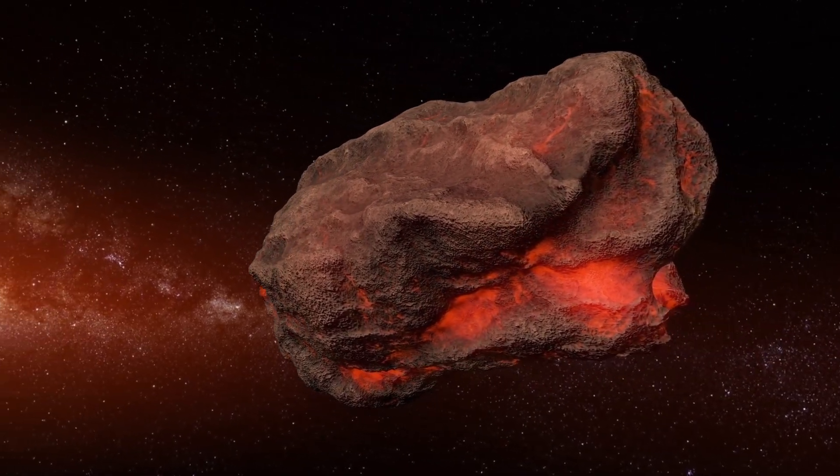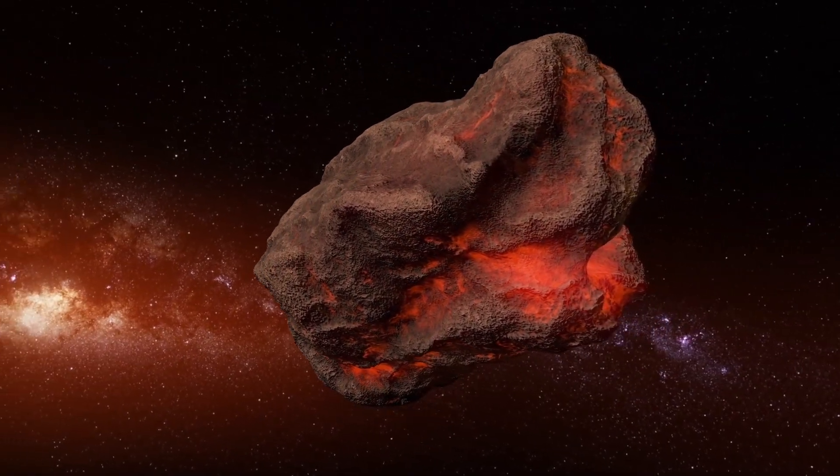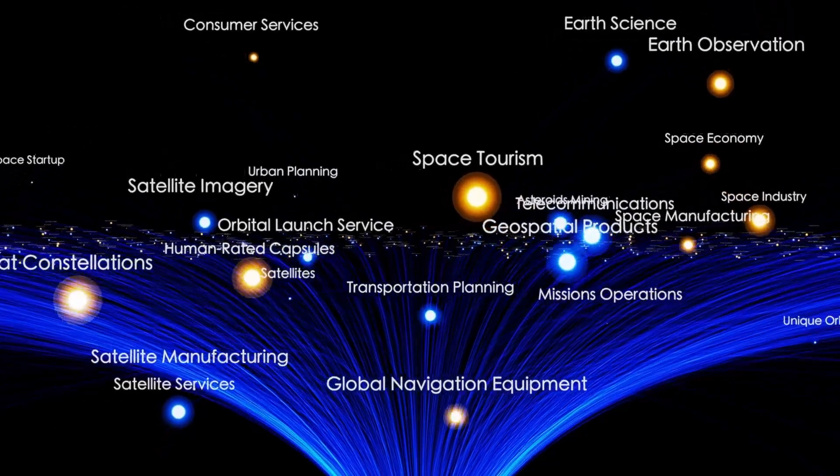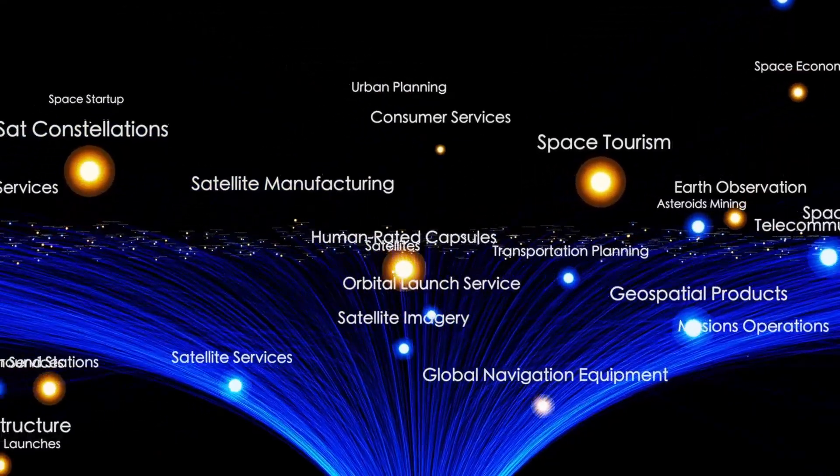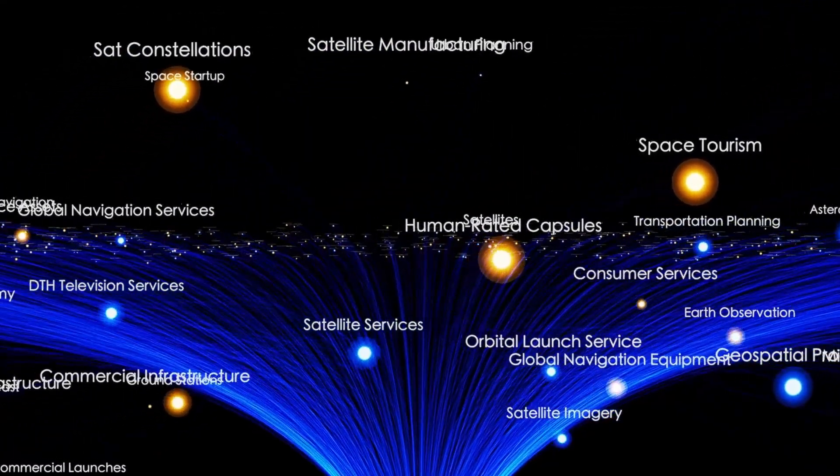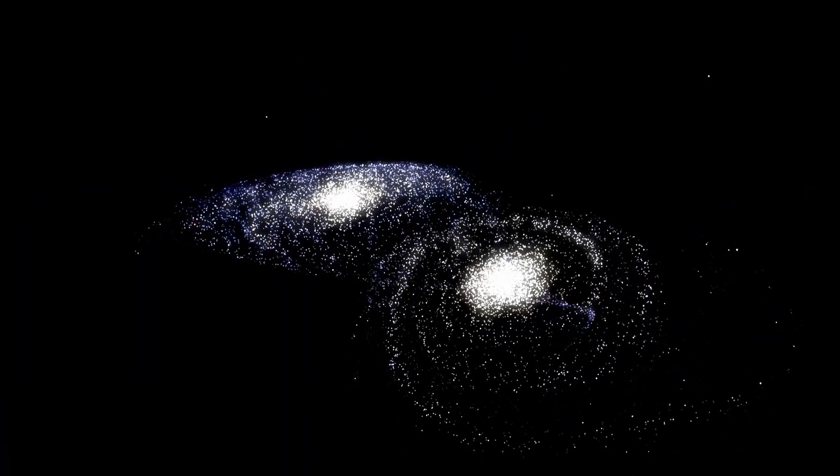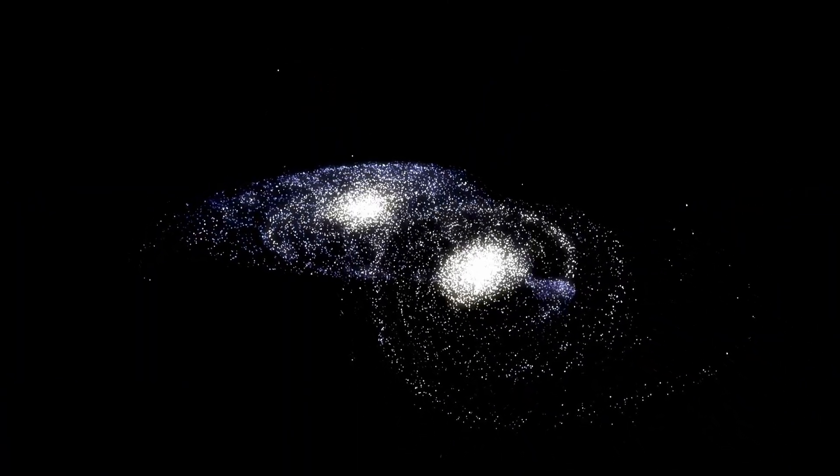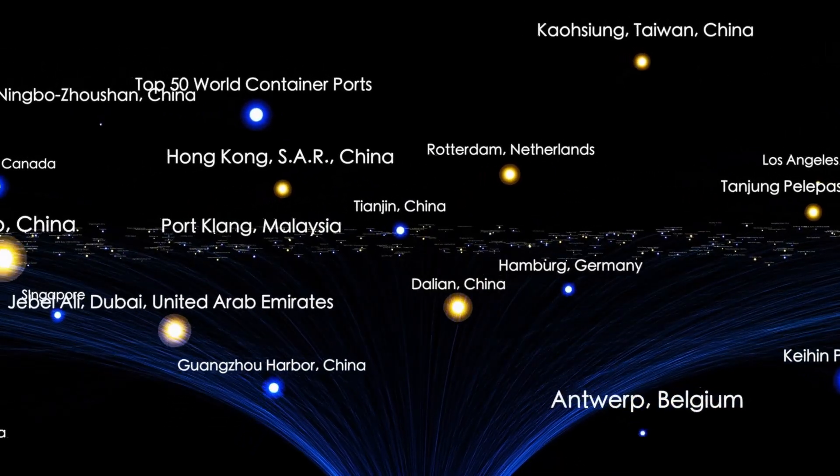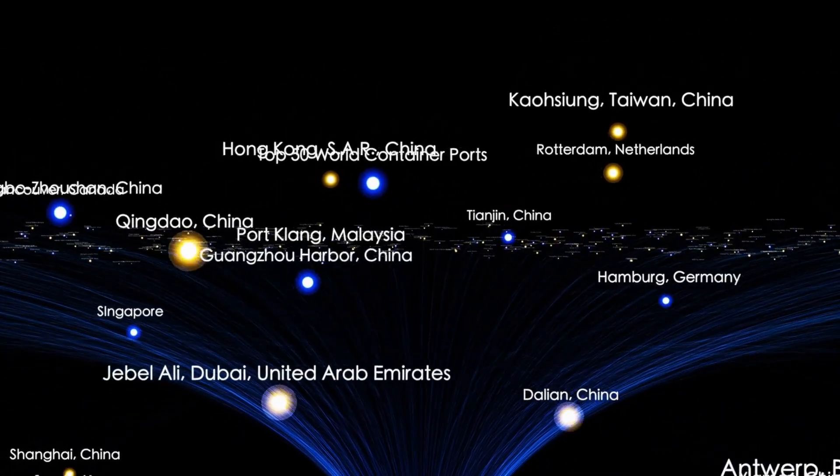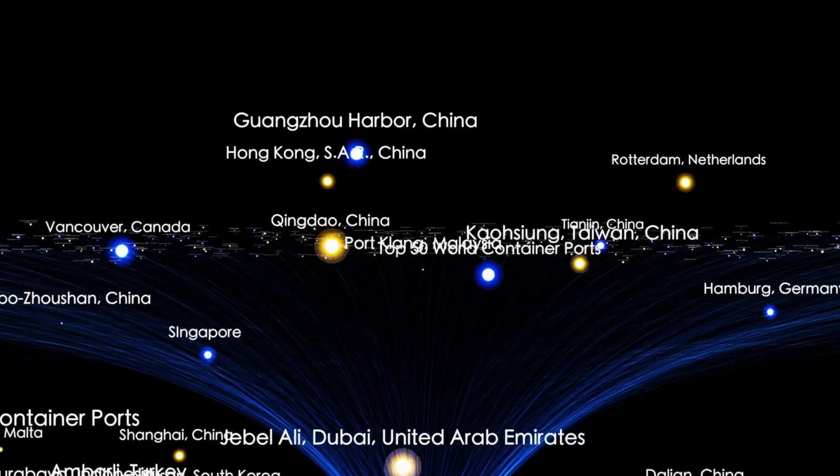Adding to the mystery, before 2017, we had never detected a single interstellar object. But within less than a decade, we have now spotted three: Oumuamua, 2I Borisov, and now 3AI Atlas. Is this just a coincidence, or have such visitors always passed through, and only now we have the technology sensitive enough to detect them?